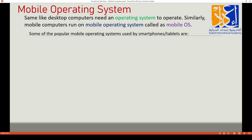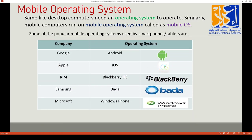Here are some popular mobile operating systems. Different companies have their own operating systems. Google uses Android, Apple uses iOS, RIM uses BlackBerry OS, Samsung uses Bada, and Microsoft uses Windows Phone. You can see this table with the company name, operating system name, and their logos. Google — Android, Apple — iOS, RIM — BlackBerry OS, Samsung — Bada, Microsoft — Windows Phone.